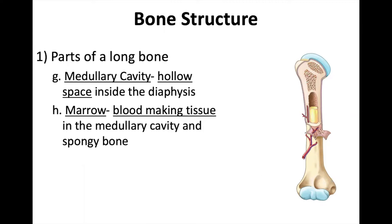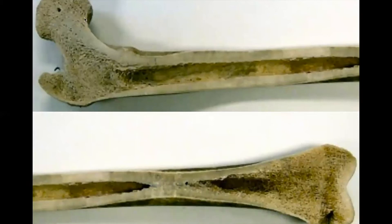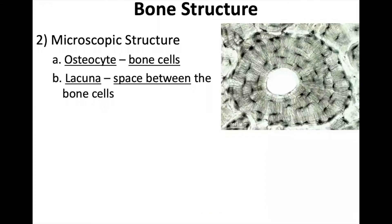Here's a cool thing I found online. In this femur, I found a picture where someone used acid to dissolve away the bone but left behind the marrow. What you have is this cool red marrow shape with all these holes and spaces where the spongy bone was. If you look closely, you can actually see some of the yellow marrow where it connected to the epiphysis.